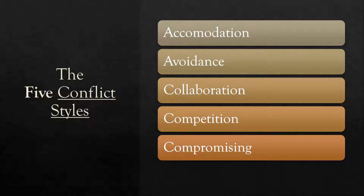Now I'm going to get into the five conflict styles taught in my program: accommodation, avoidance, collaboration, competition, and compromising. Each of these styles has a time and a place to use them, and they'll be important in your jobs and personal life. Most people find they already frequently use one of these styles in conflict and tend to rarely use the others. But in order to be truly successful in conflict resolution, you need to know about when to use all five.